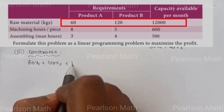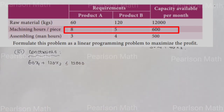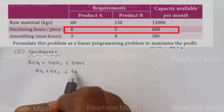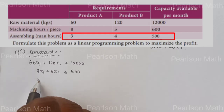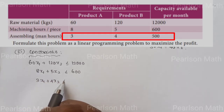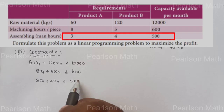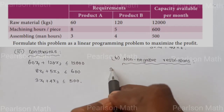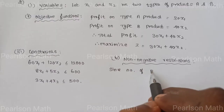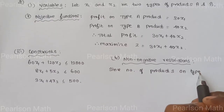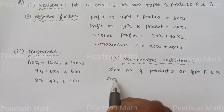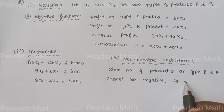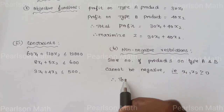The constraints from the resource data are: 60X1 plus 120X2 less than or equal to 12,000; 8X1 plus 5X2 less than or equal to 600; 3X1 plus 4X2 less than or equal to 500. Since the number of products A and B are non-negative, X1 and X2 are greater than or equal to 0.